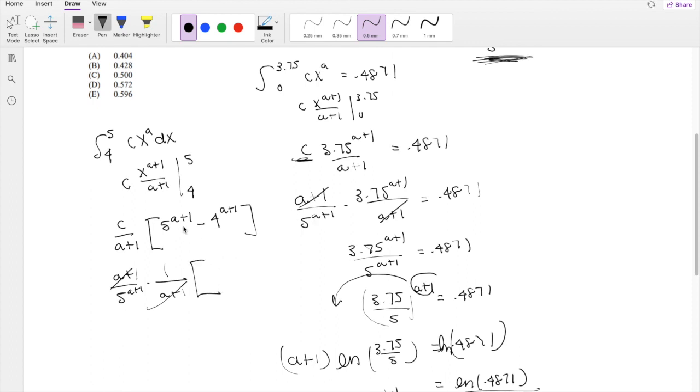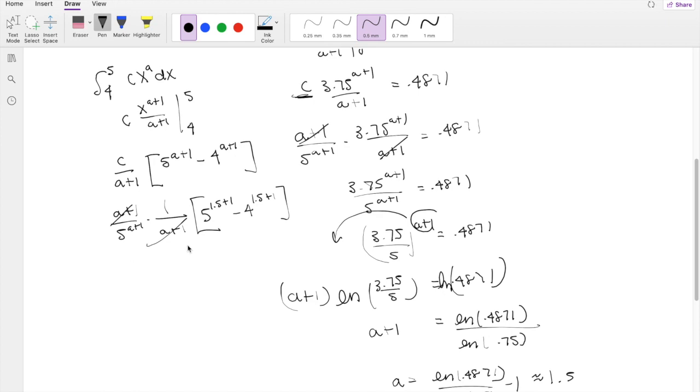And we know that a is actually just 1.5, so we can just plug it in. 5^(1.5+1) minus 4^(1.5+1). All right.